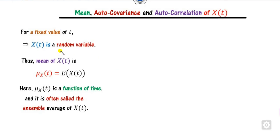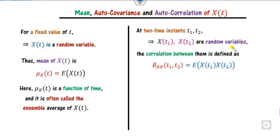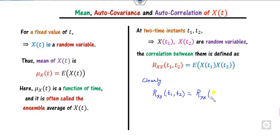The mean of this random process x(t) for a fixed value of t is defined as shown here. This is a function of time and is called the ensemble average. On the other hand, if you consider two time periods t1 and t2, these are called random variables. The corresponding function R_x is called the autocorrelation between them. You can clearly see that this is symmetric, because R_x(t1, t2) equals R_x(t2, t1).